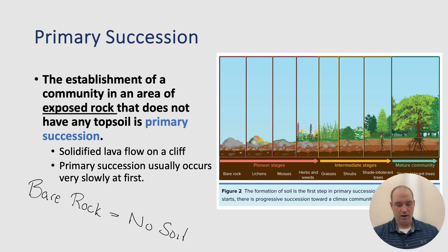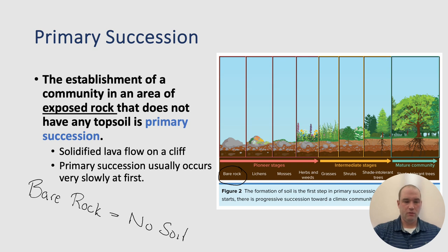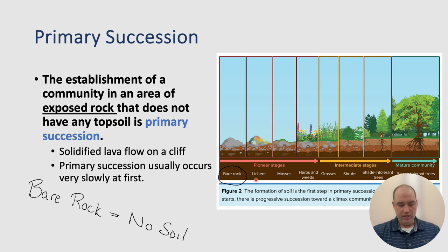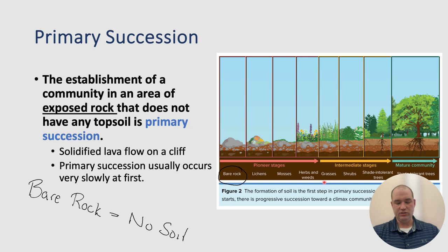Starting with bare rock, there is nothing that can grow. In order for something to grow, we need to start breaking that down into soil. The pioneer species called lichens comes in and, with its acidity, starts breaking that down into soil. Once there's a little bit of soil present, mosses start to develop, and then herbs and weeds begin to form in that newly developed soil. We then enter into our intermediate stages where we start to see grasses begin to form in this particular habitat.